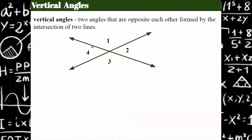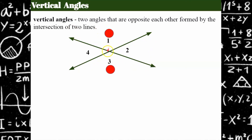Now let's talk about vertical angles. Vertical angles are two angles that are opposite each other when formed by the intersection of two lines. Here we have two lines intersecting, and angles one and three are opposite each other and vertical. Angles two and four are also opposite each other. Notice these are not adjacent — they are opposite.